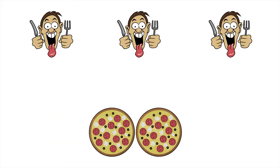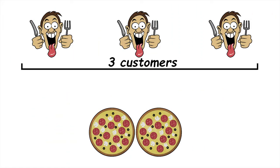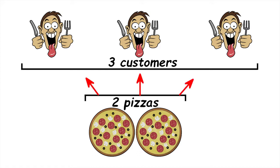Let's see if we can help Peppy. There are three customers and two pizzas. We want to divide the pizzas up into equal sized slices and share them out so each customer gets the same amount of pizza.